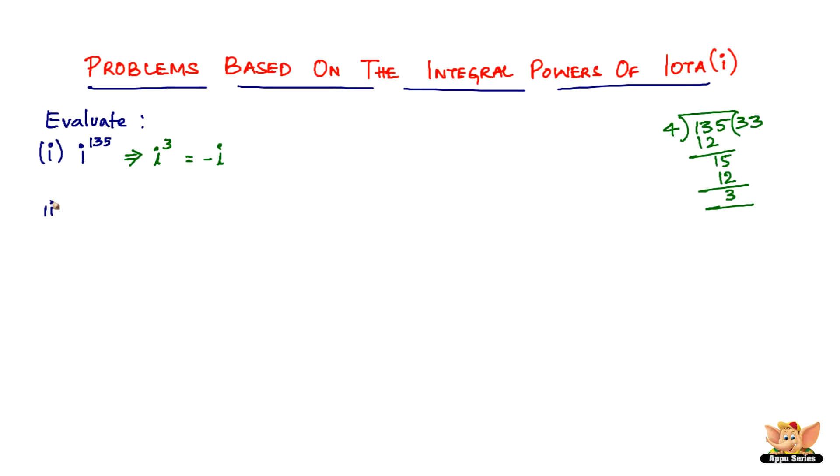Let's quickly solve another problem. We've got i to the power 19. We don't even have to work it out because 4 times 4 gives you 16 and the remainder is going to be 3. So again we have i to the power 3, which is nothing but minus i.